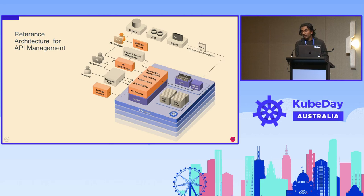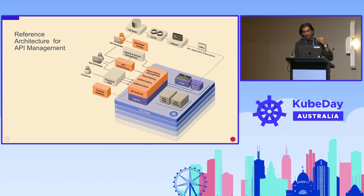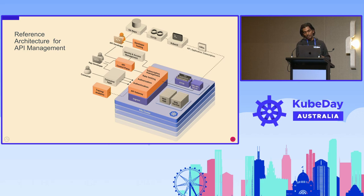I'm not going to prescribe a specific gateway, analytics platform, or control plane — that is up to you to decide by evaluating different criteria and your organization's requirements. But at a high level, this is what we need for basic API management on top of Kubernetes. There are around 100 different API gateway solutions you can pick from. For analytics and tracing, based on your specific requirements, you can choose one and do the implementation.